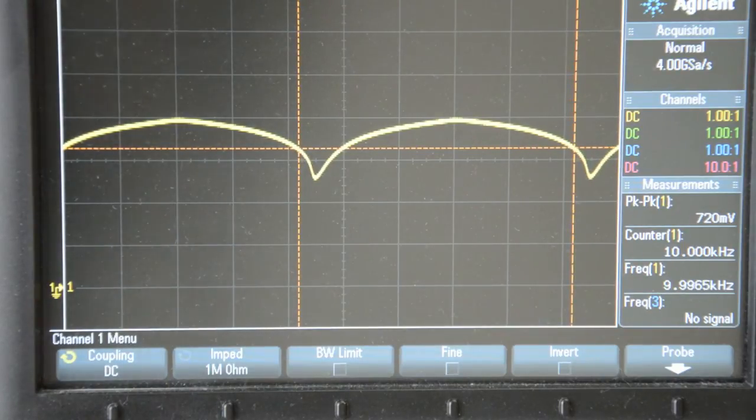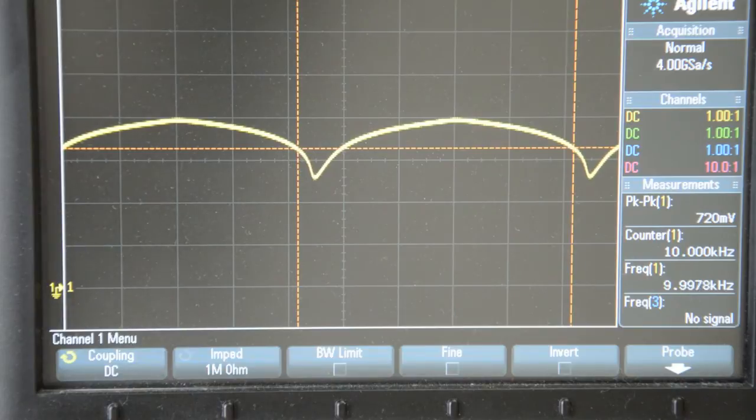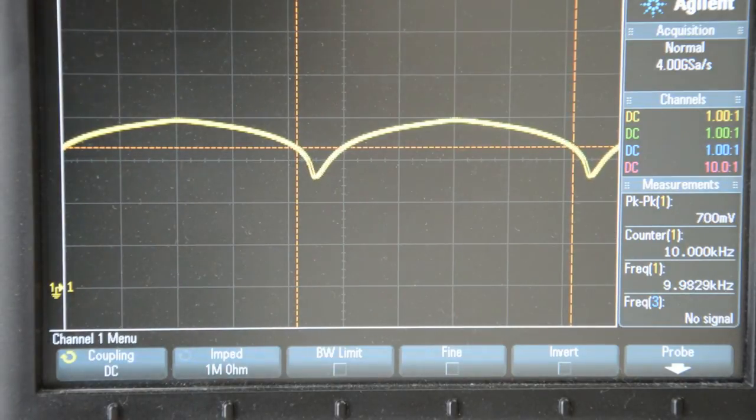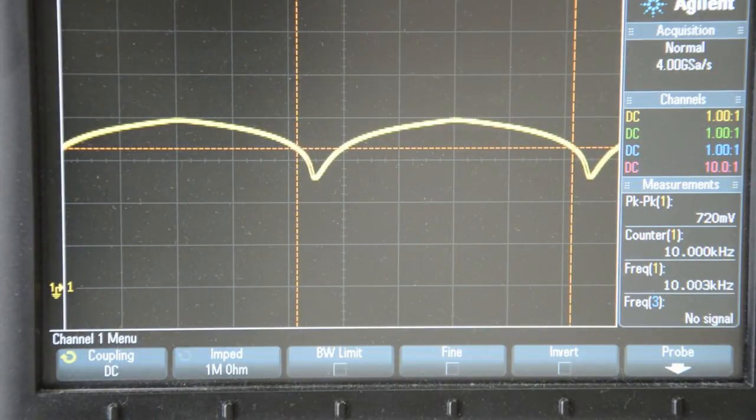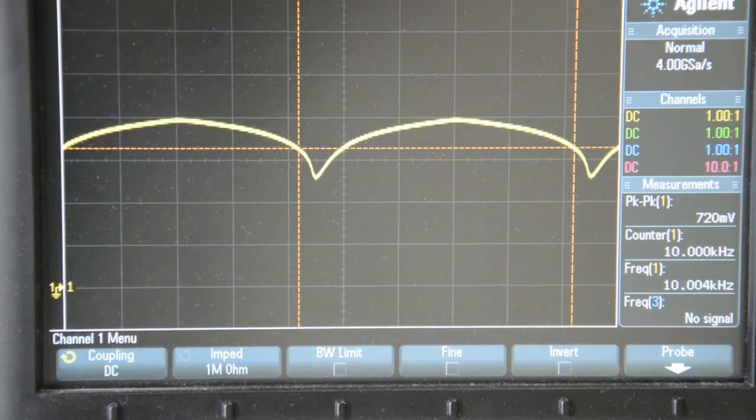And, next, I will hook this up to the limiter output. I have to turn off the camera for that, because I'm actually lacking an SMA to BNC adapter, so I have to remove the log voltage output and hook up the limiter output instead.